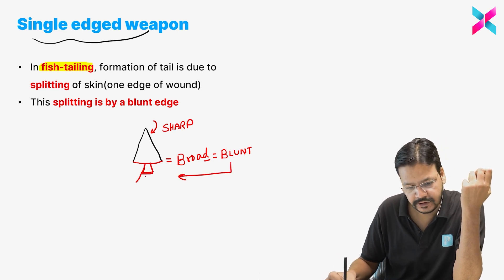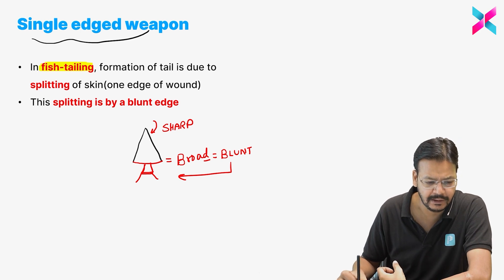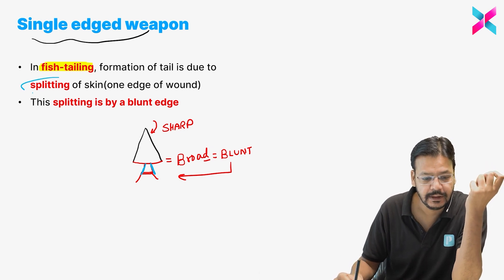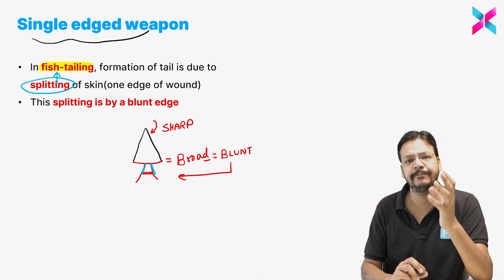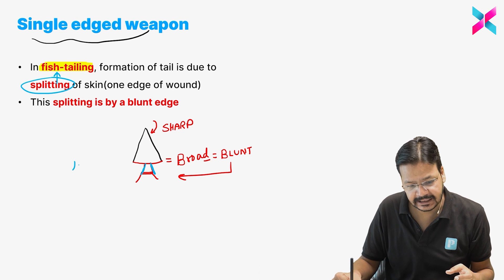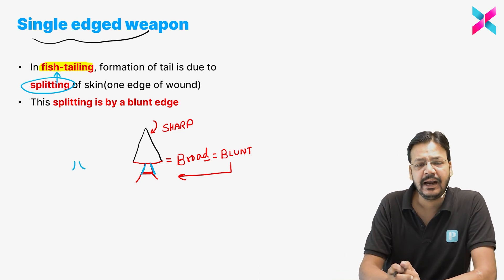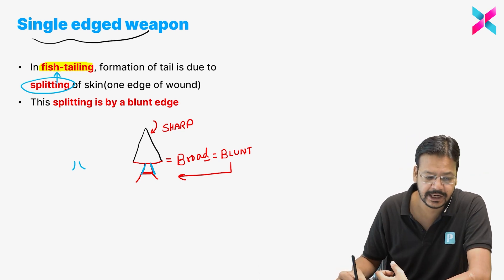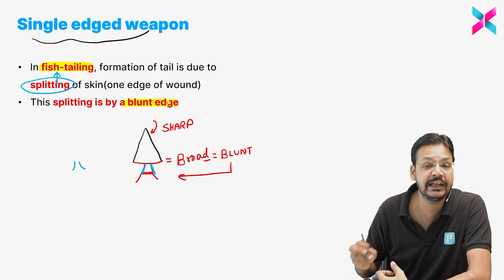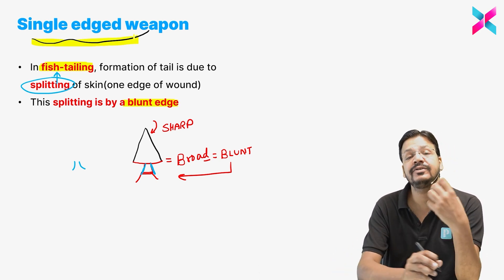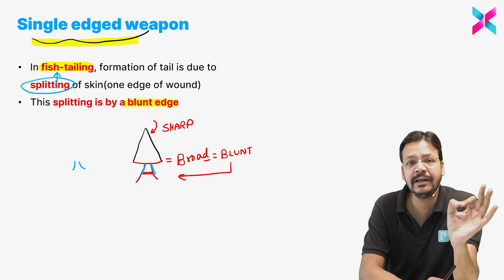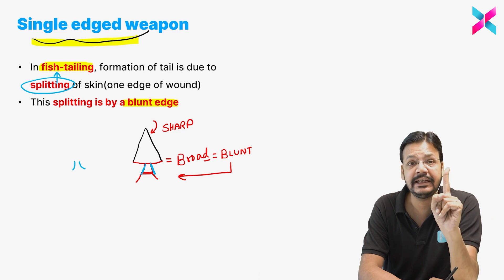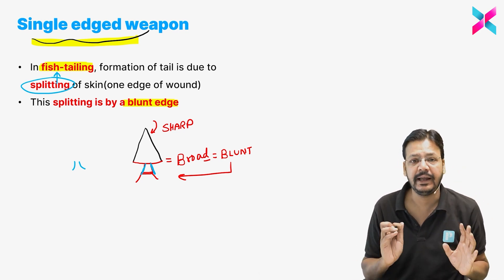Because of blunt force, there is a splitting of the skin. I have made it large in the diagram, but in reality it is very small. This splitting at the blunt edge is known as fish-tailing. You can get two questions in the exam on this: splitting or fish-tailing is caused by the blunt edge and is seen only in single-edge weapons. Be careful — fish-tailing is caused by the blunt edge or blunt side of the weapon.